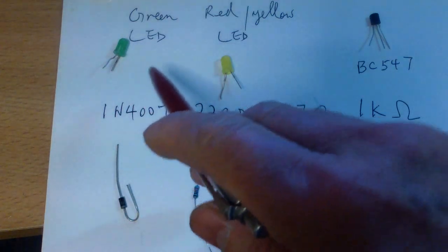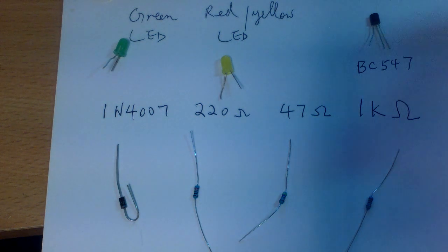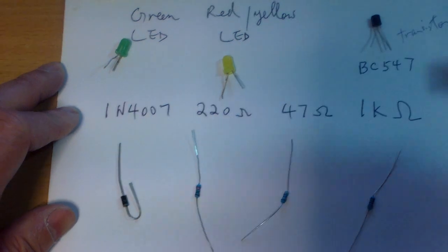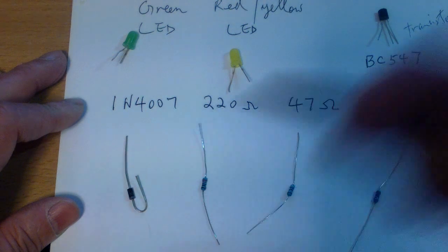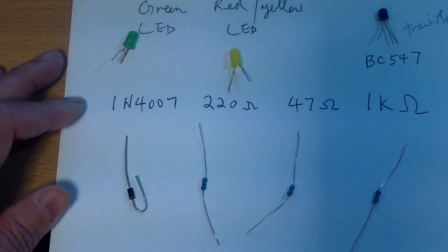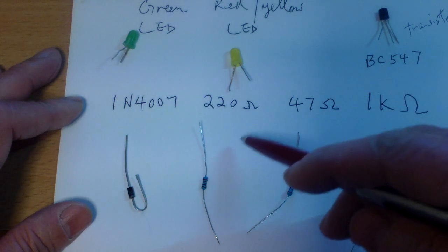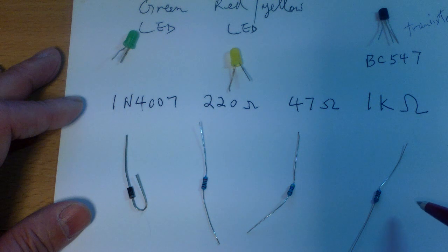Up here is a green LED, red LED, BC547 transistor and I'm using a 1N4007 diode. And then you have a 220 ohm resistor, a 47 ohm resistor and a 1K ohm resistor.